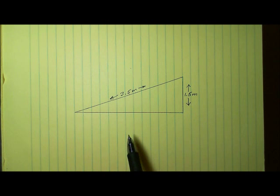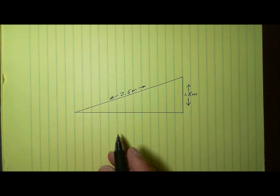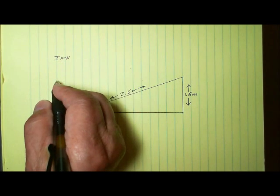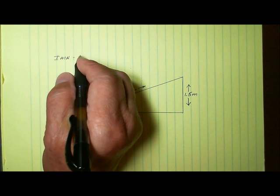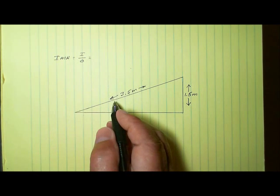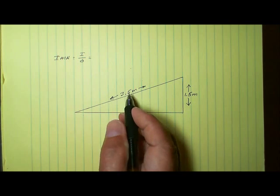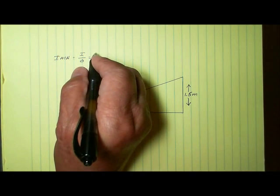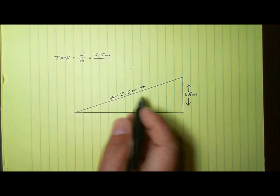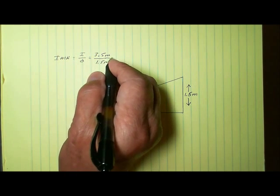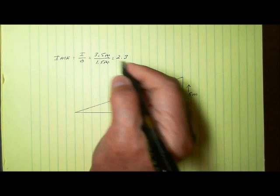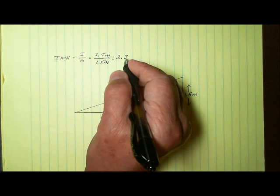To find the ideal mechanical advantage — the IMA — of an inclined plane, we divide the input side by the output side. That gives us 3.5 meters divided by 1.5 meters. When we work that out, we get 2.3. The units factor out, so there are no units in the answer.